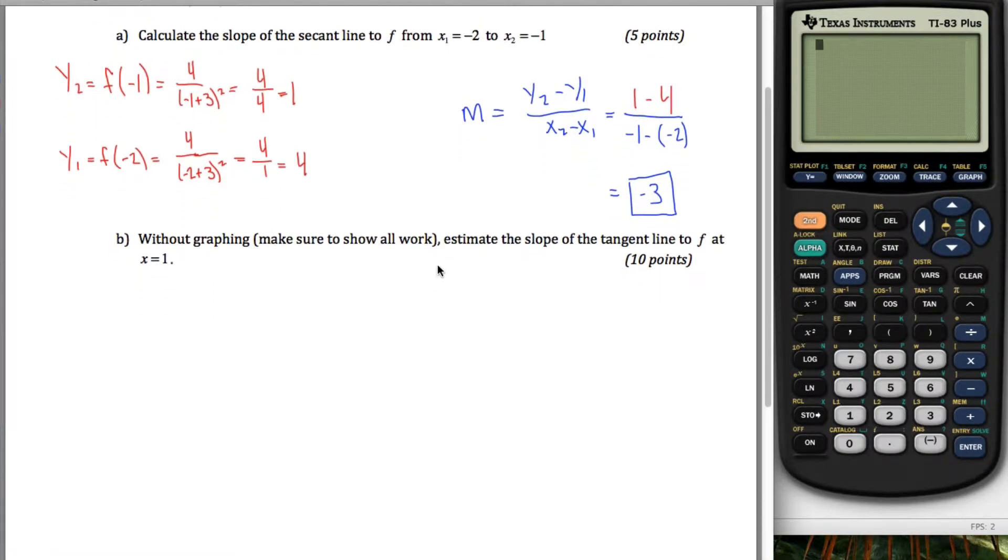Now estimate the slope of the tangent line, you'll see this is worth more points because it's a little bit more work down here. To estimate the slope of a tangent line without graphing and that's key, what I want to do is I want to use this formula basically, and so what I'll need to know is x1, x2, y1, and y2, but there's a little bit of a catch. I want the two x coordinates, I want one of them to just be 1, and I want the other one to be some value really close to that, so maybe slightly above 1, or maybe I'll do it again and pick some number slightly below 1.